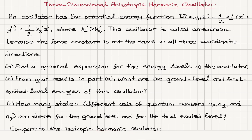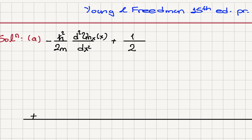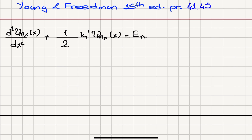This problem is very similar to the three-dimensional isotropic harmonic oscillator. So let's start the same way as the previous problem by writing the one-dimensional Schrödinger equation for the x-direction: −(ℏ²/2m)(d²ψₙₓ(x)/dx²) + (1/2)k₁'x²ψₙₓ(x) = Eₙₓψₙₓ(x).